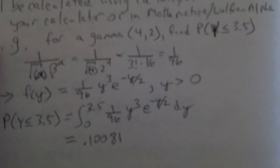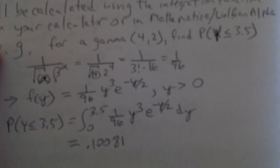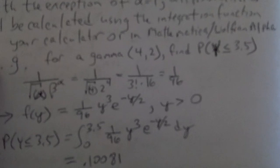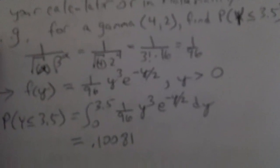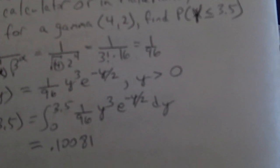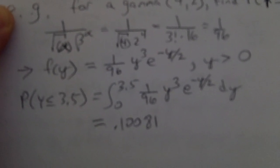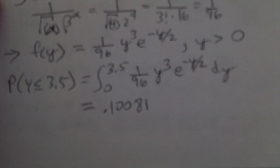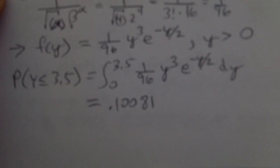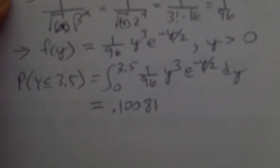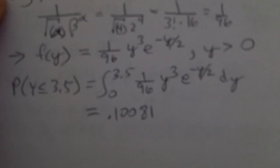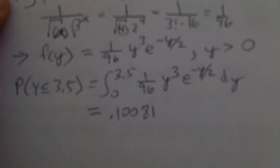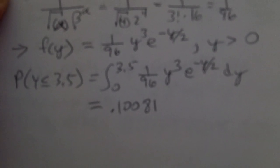So just as an example, if we had a Gamma(4, 2) and we were looking for the probability that Y is less than or equal to 3.5 — by the way, in that notation the first value is alpha and the second value is beta — we've gone through the calculation of the constant, which is 1 over 96. So there's our density and the integration you would have to perform. You're going to use your calculator, or for homework purposes you can use Mathematica or Wolfram Alpha; just remember to write down what you put in and give the appropriate output.